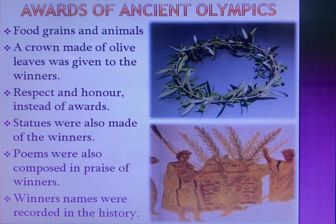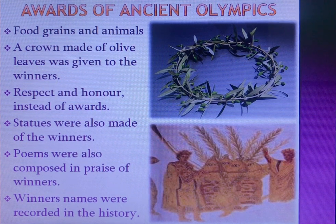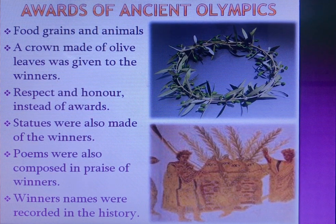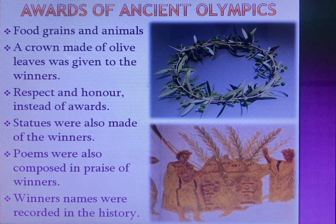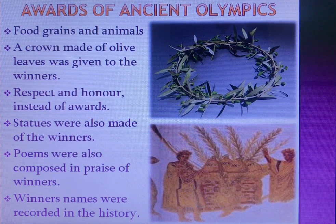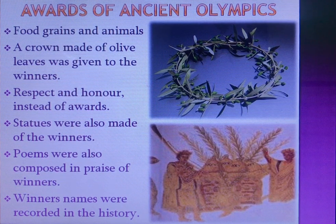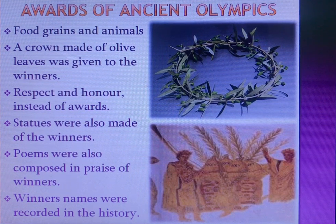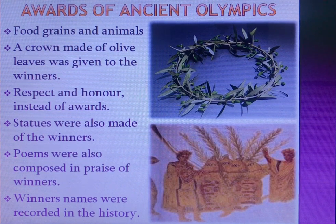The awards of Ancient Olympic Games included food grains and animals given to winners. A crown made of olive leaves was given to honor the winners. Instead of material awards, winners also received great respect from all people — statues were made in their honor, poems were composed to praise them, and their names were recorded in the history of the Greek people.